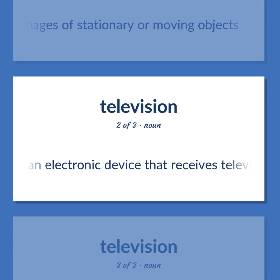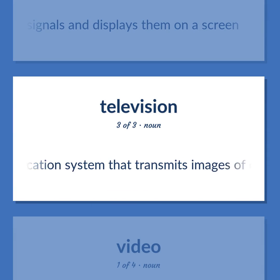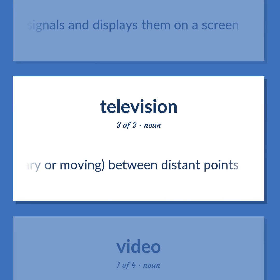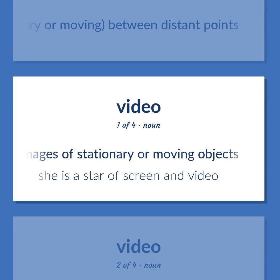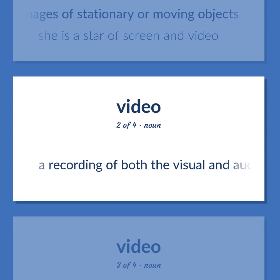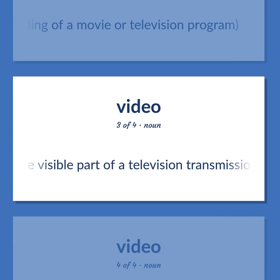Television: a telecommunication system that transmits images of objects, stationary or moving, between distant points. Broadcasting visual images of stationary or moving objects. Video: she is a star of screen and video. A recording of both the visual and audible components, especially one containing a recording of a movie or television program. The visible part of a television transmission.